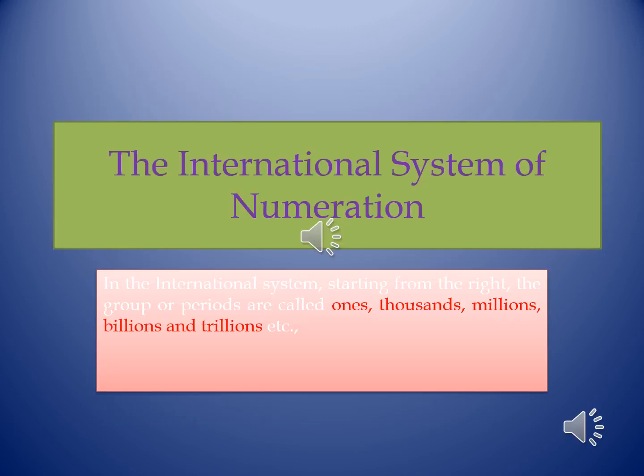In the international system of numeration, starting from the right, the groups or periods are called ones, thousands, millions, billions, trillions, etc.